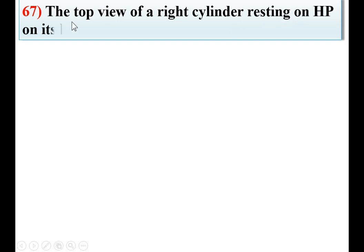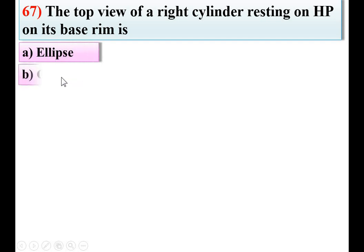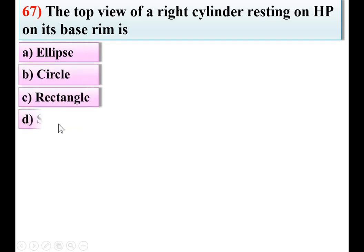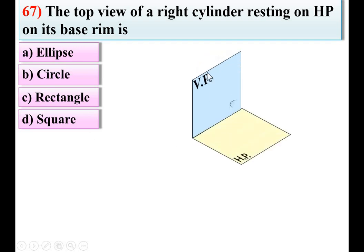Question 67: The top view of a right cylinder resting on HP on its base rim is — option A: ellipse, B: circle, C: rectangle, D: square. Considering the figure with the right cylinder resting on HP on its base, if we look at the top view, it is also a circle. So B is the right answer.